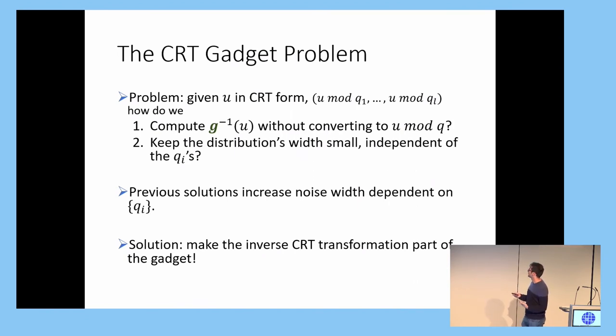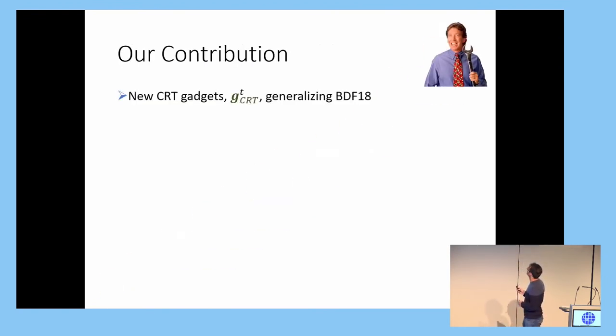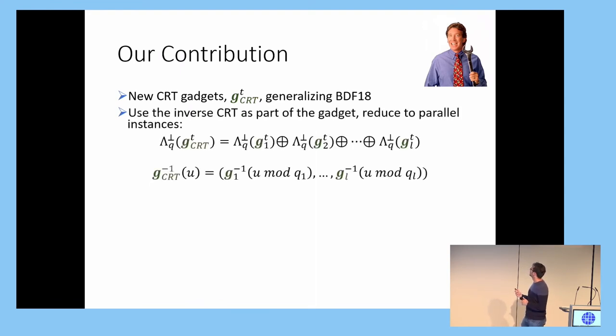So what we're going to do, and this is also what was done in the Africa Crypt 18 paper, is we're going to take the inverse CRT transformation and make it part of the gadget. So we generalize these gadgets, and so we actually came up with them, and then we realized that they were a generalization of these Africa 18 gadgets. Now the important, what allows us to do L parallel inversions, is that the gadgets we give, they have a direct sum structure, where each of these GIs are just a power of B gadget that we get to pick. So you can have all of these be power of two gadgets, or bit decompositions, and then you can have a very narrow distribution if you'd like to.